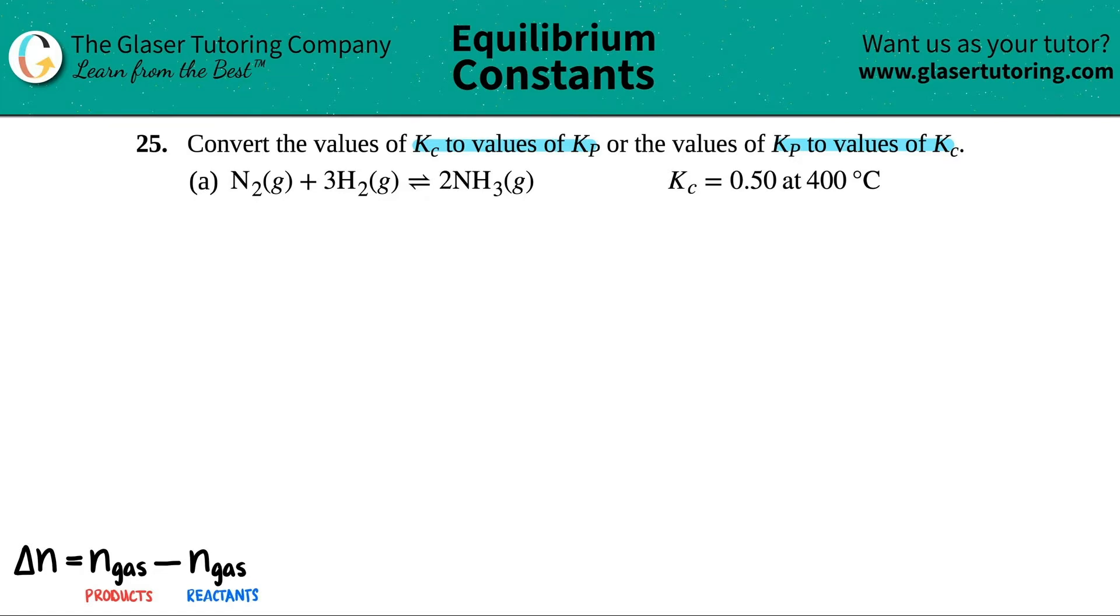So we have N2 gas plus 3H2 gas, and this comes to equilibrium because it's a double arrow with two ammonias, NH3, and that's a gas.